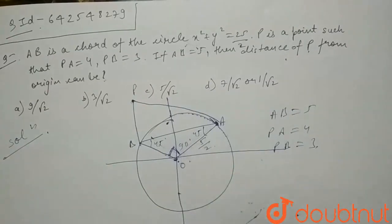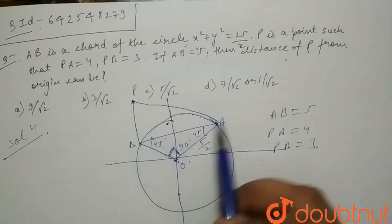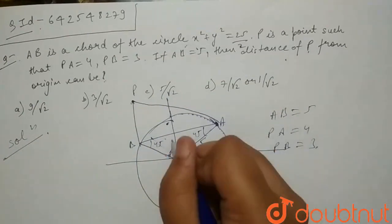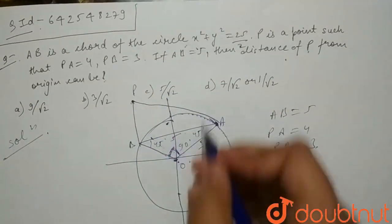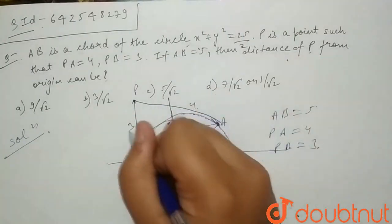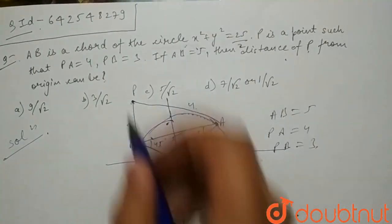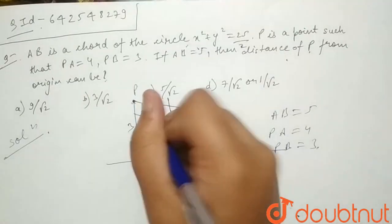And as you can see in this triangle, that is PBA, the Pythagoras theorem is following as this side is 5, PA is 4, and this is 3. It follows the Pythagoras theorem, so angle BPA is also 90 degrees.